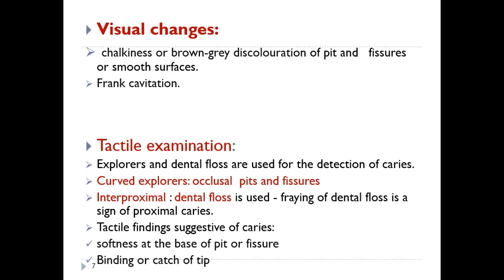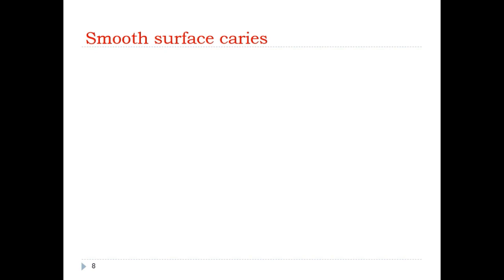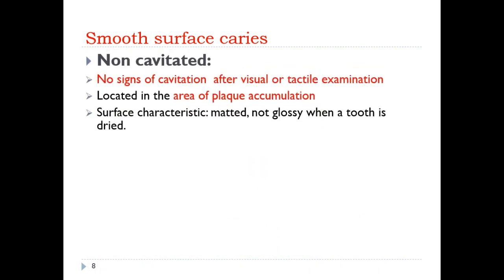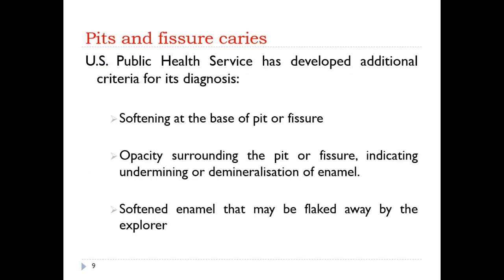Tactile findings suggestive of caries include softness at the base of a pit or fissure and binding or catching of the explorer tip. Smooth surface caries can be non-cavitated or cavitated. In non-cavitated lesions there are no signs of cavitation on visual or tactile examination; they are located in areas of plaque accumulation with a matted, not glossy surface when dried. In cavitated lesions, visual breakdown of the tooth surface is seen, with soft walls or floors.